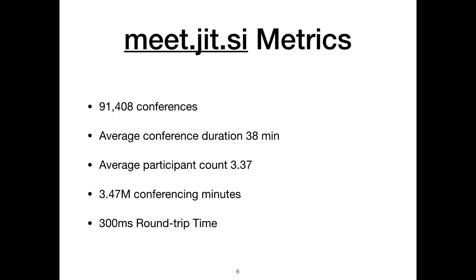Our service has been steadily growing — we have doubled in traffic since last year. For this past month in September, we did a little more than 91,000 conferences, or about 3,000 calls per day on average. The average duration of a call is about 38 minutes, and the average size of a call is 3.3 participants. In total, we did almost 3.5 million conferencing minutes, or 7.25 million participant minutes. The average RTT on our service is just slightly below 300 milliseconds.